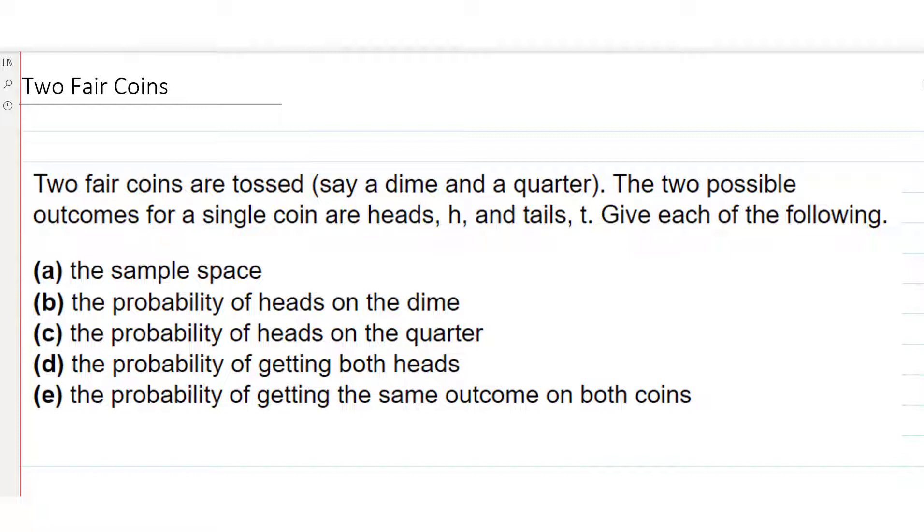A, the sample space. B, the probability of heads on the dime. C, the probability of heads on the quarter. D, the probability of getting heads on both. And E, the probability of getting the same outcome on both coins, so either both heads or both tails.